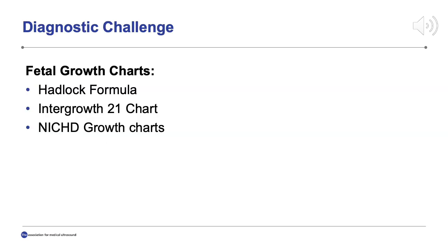The incidence of fetal growth restriction is approximately three to seven percent of singleton gestations. However, this reported incidence is dependent upon many factors, including which definition for FGR is applied and the growth chart that is used. The ACOG definition for fetal growth restriction does not take into consideration the individualized growth velocity for each fetus. This presents an interesting clinical challenge: we must identify patients with a pathologic basis for altered growth, a group distinct from those which are constitutionally small. By appropriately identifying a fetus with fetal growth restriction, appropriate risk modifications and interventions can be undertaken.